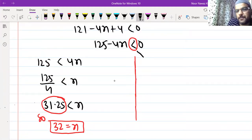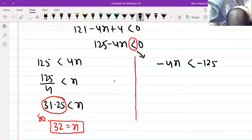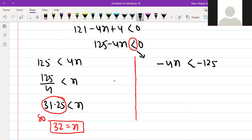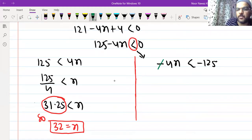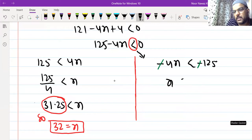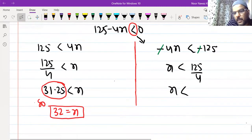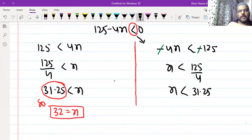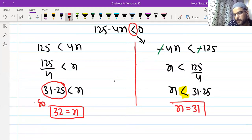That's our answer. But children, pay attention. If you write it like this, if you take n and 125 to the other side, you can do it this way. If you do it this way, then what happens? Minus cancels with minus, and n is less than 125 by 4. When I divide, it's 31.25. Now you're saying n should be less than 31.25. So less than 31.25, the integer is directly 31. So here the answer is 31, and on the left side my answer is 32.